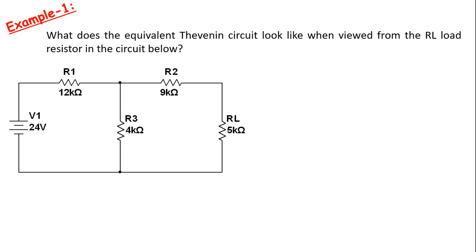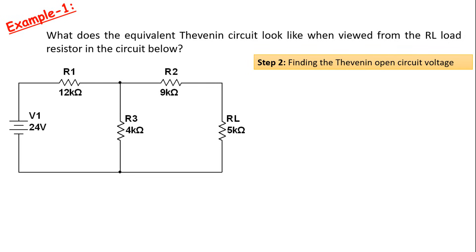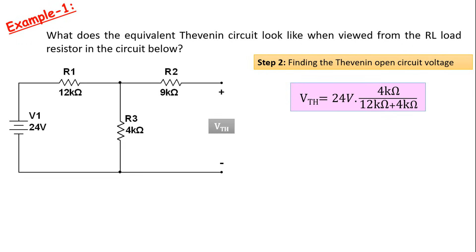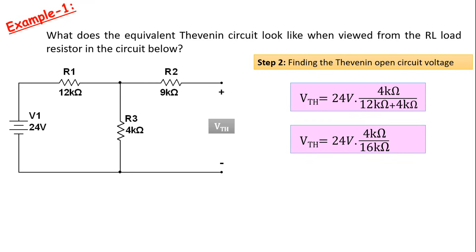Step 2 is to find the Thevenin open-circuit voltage. If we find the voltage here by making an open circuit where the RL resistor is, we can find the Thevenin open-circuit voltage. The voltage here is actually the voltage across the 4kΩ resistor R3. Because the load resistor is open circuit, no current flows through the 9kΩ resistor R2. Therefore, this resistor has no effect on the circuit.